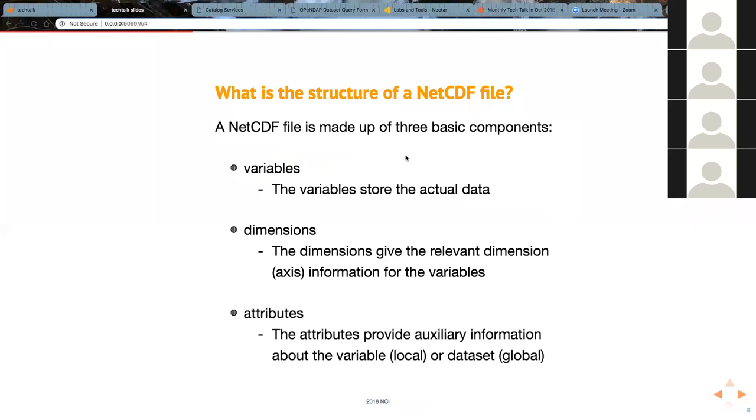And attributes. The attributes provide auxiliary information for the variable. So metadata about the variable, what's its name, how is it recorded, and the like, as well as global data. So what was the reason you collected the data, possibly an abstract about the data set, etc.